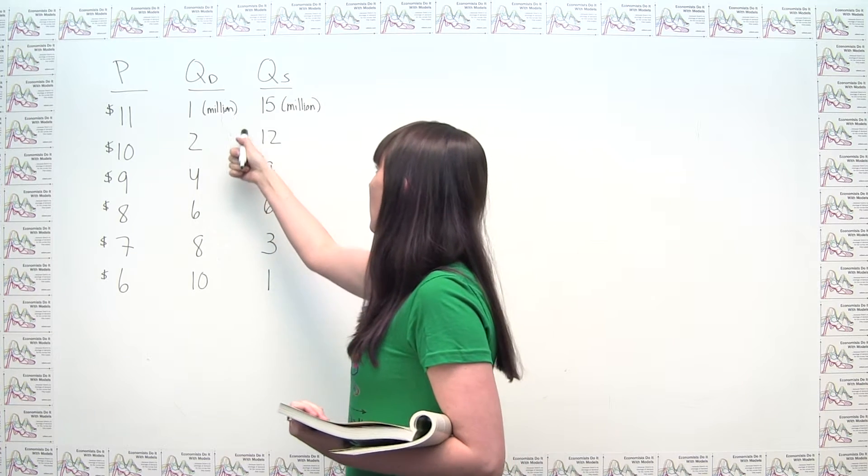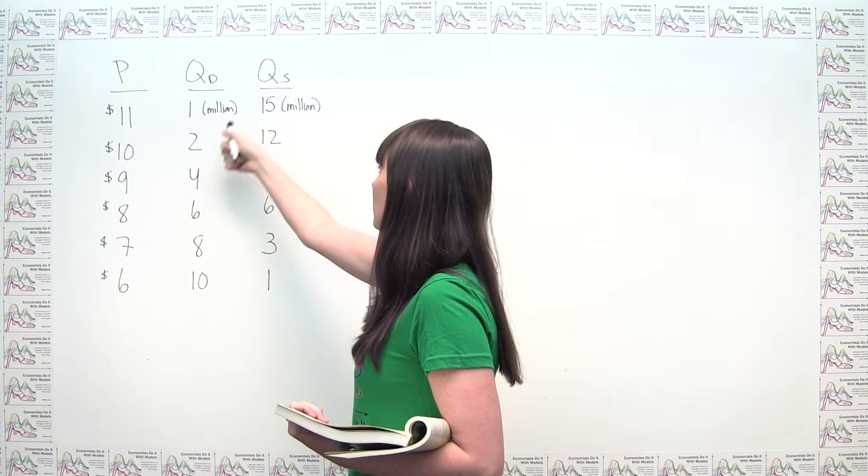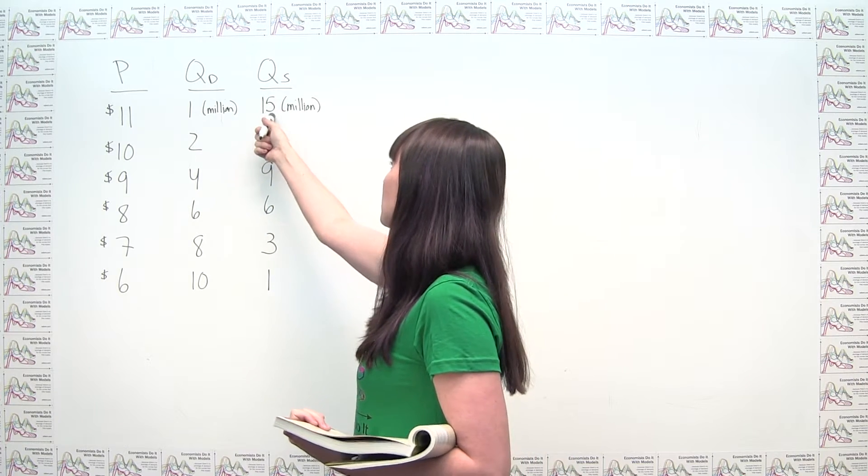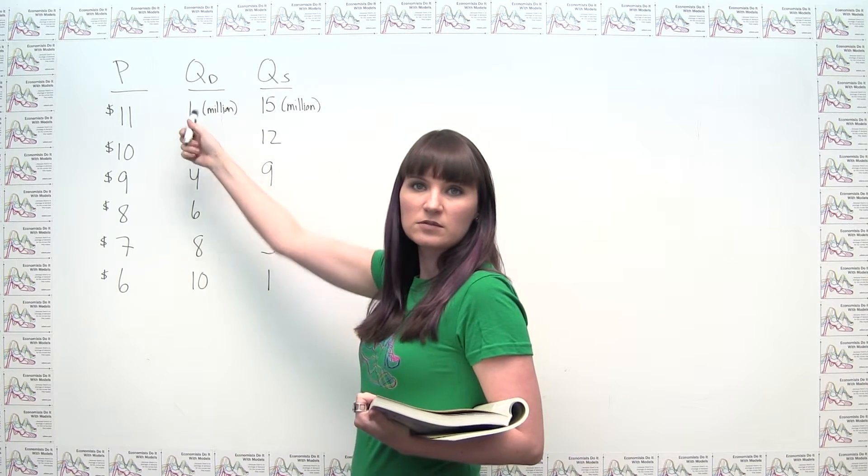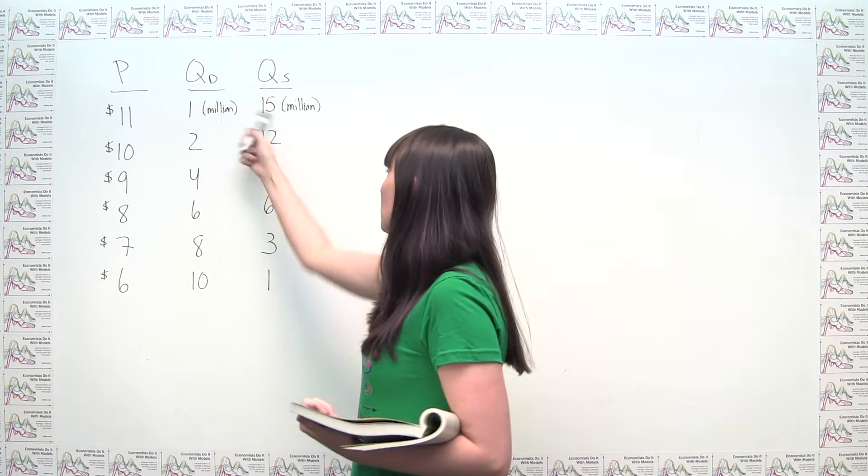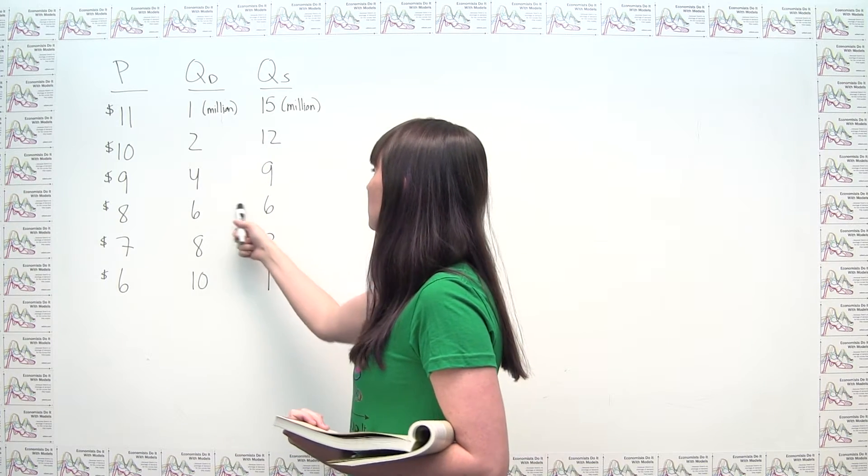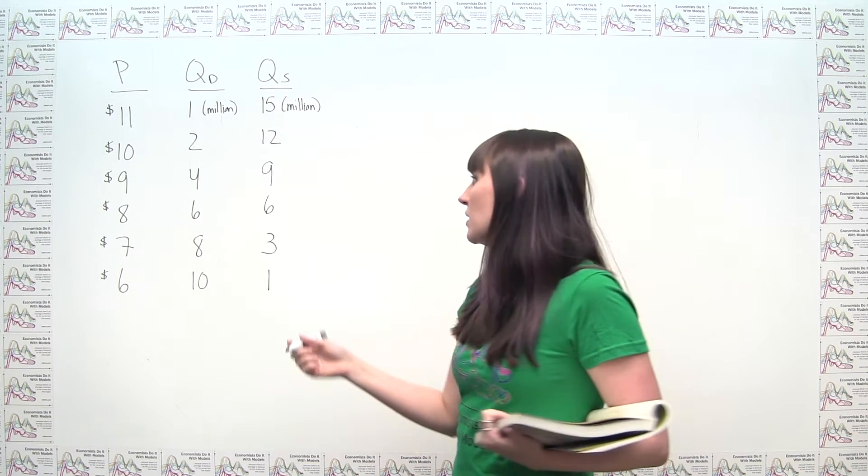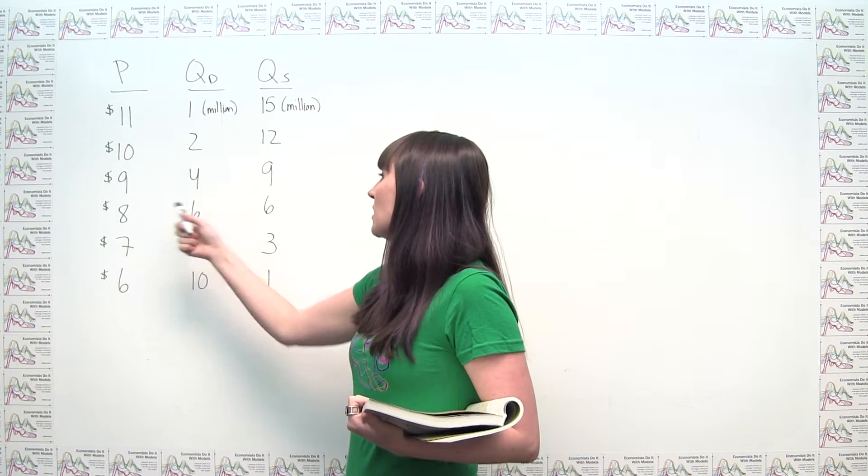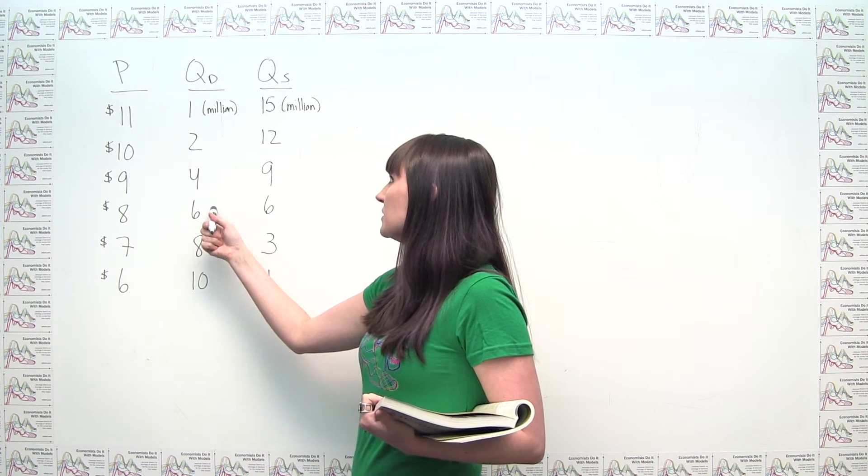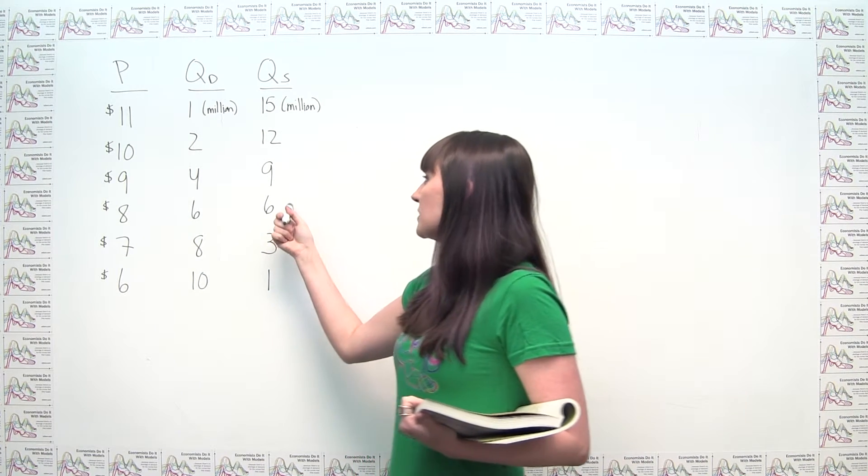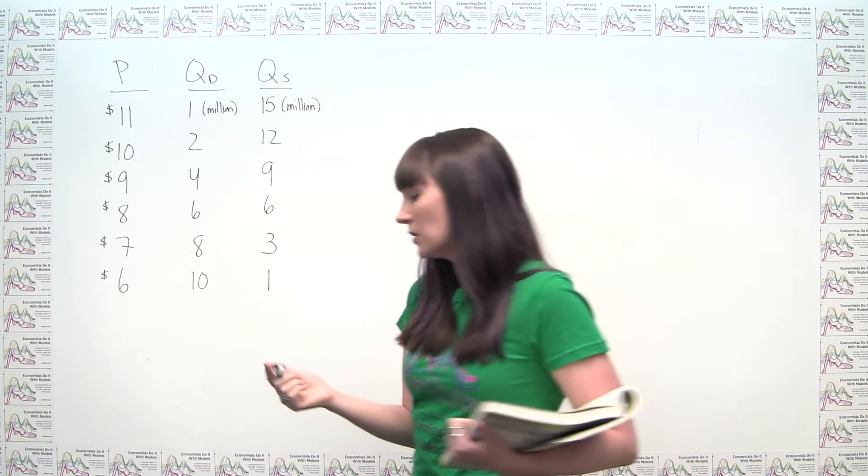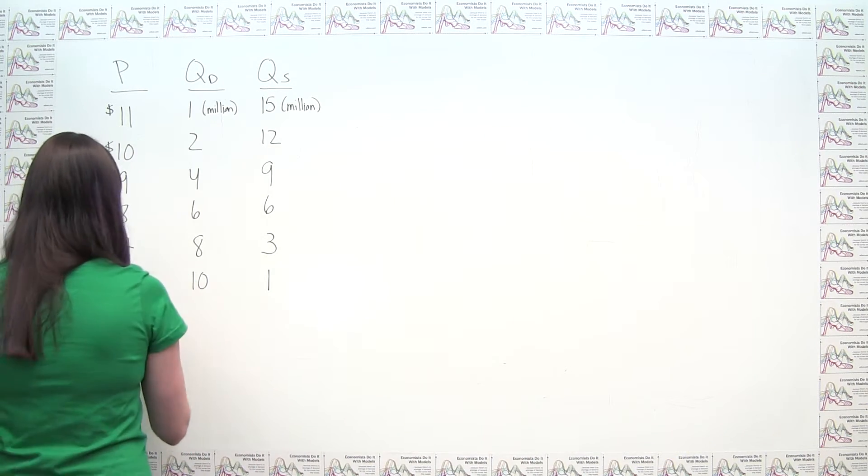So we notice for a while when we have prices that are high, we have what's called a surplus, and that the quantity supplied is greater than the quantity demanded. So we have extra supply. But then when we get down to a price of $8, we see that our condition for equilibrium is actually satisfied, in that at a price of $8, consumers are demanding six million frisbees, and suppliers are in fact supplying the market with those same six million frisbees.